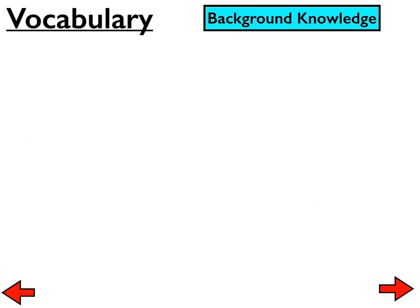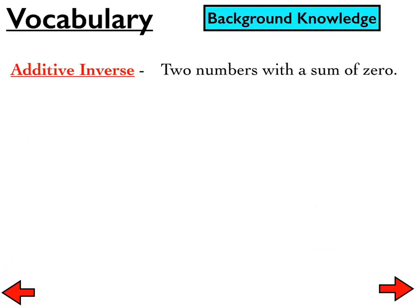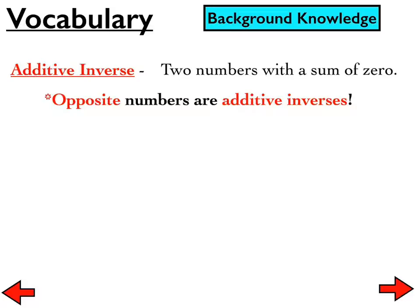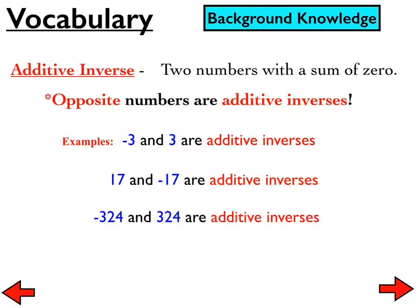Our focus today is adding integers. In the last lesson, we talked about absolute value and the idea of the additive inverse. When we are referring to additive inverse, we are referring to two numbers with a sum of zero. One of the things you learned in sixth grade is the idea of opposite numbers. Opposite numbers are additive inverses of each other because they do have a sum of zero. Examples are like negative 3 and positive 3, 17 and negative 17, and negative 324 and positive 324.